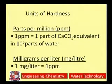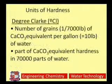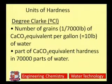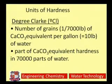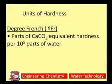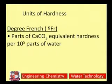Milligram per liter is the part of hardness-causing salt present in mg per liter. Degree Clark is defined as the number of grains of CaCO3 equivalent per gallon of water, or one part of CaCO3 equivalent hardness per 70,000 parts of water. Degree French is parts of CaCO3 equivalent hardness present per 10⁵ parts of water. Different units are used in different places — degree Clark, degree French, mg/L, or ppm.